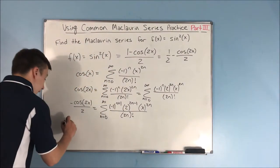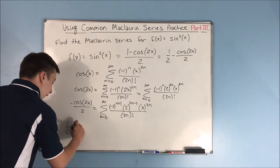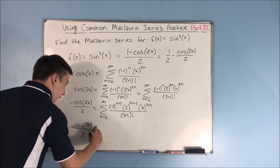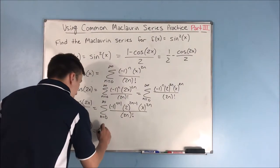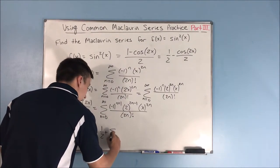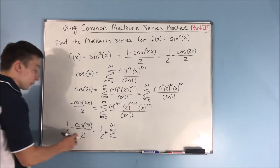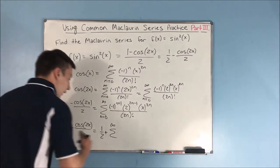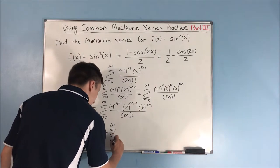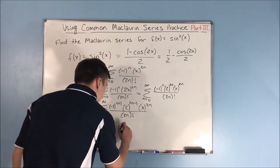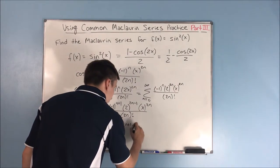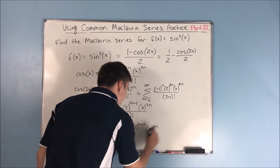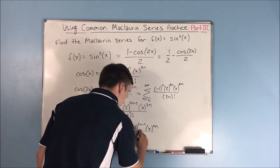Lastly, putting that 1 half out in front — so 1 half minus cosine of 2x over 2 — that's going to be equal to 1 half plus the sum from n equals 0 to infinity of negative 1 to the n plus 1 times 2 to the 2n minus 1 times x to the 2n over 2n factorial. We say plus because we already took that negative into account.